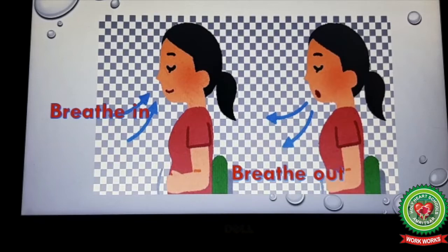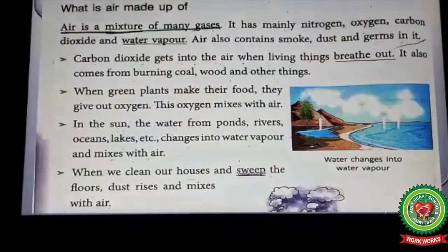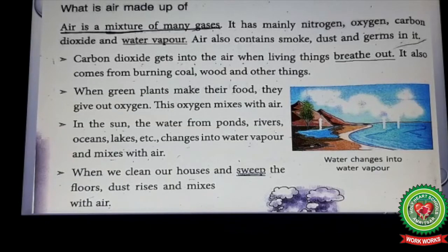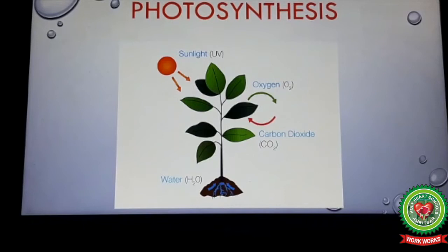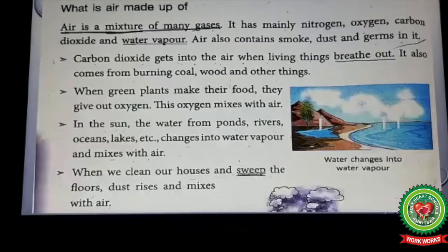Point number two: when green plants make their food, they give out oxygen. This oxygen mixes with air during the process of photosynthesis. Plants release oxygen into the air.